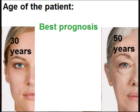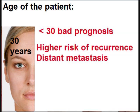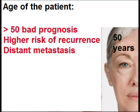Age of the patient: best prognosis is between 30 to 50 years of age. If the patient is younger than 30 years, it has bad prognosis with higher risk of recurrence and distant metastasis. And if the age of the patient is older — more than 50 years — it also carries bad prognosis with higher risk of recurrence and distant metastasis.